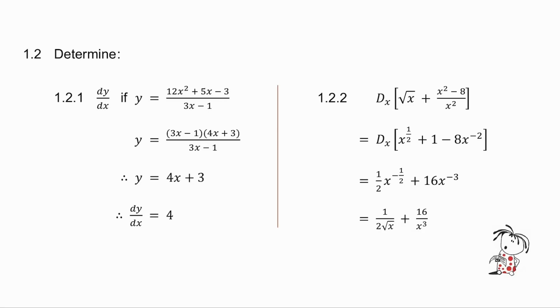Question 1.2.1, they ask you for dy by dx. The first thing I do is factorize the trinomial, and then the 3x minus 1 cancels. I now take the derivative of 4x plus 3, and I get an answer of 4.